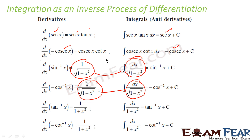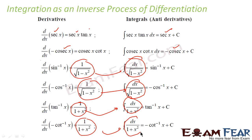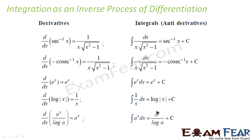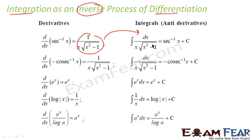Similarly, you can see that for tan inverse x, d/dx is 1 by (1 + x²), and the other way round is also true. For minus cot inverse x, the derivative is also 1 by (1 + x²). Please note: when you integrate 1 by root(1 minus x²), you can write either sin inverse x or minus cos inverse x. When you integrate 1 by (1 + x²), you can write tan inverse x or minus cot inverse x. You differentiate sec inverse x and you get 1 by x·root(x² minus 1). You integrate that and you get sec inverse x, and similarly for minus cosec inverse x.